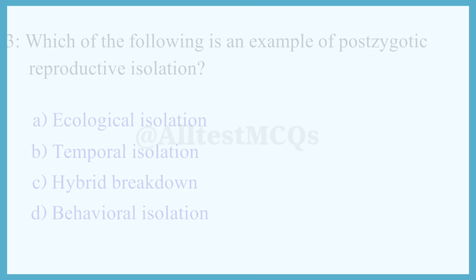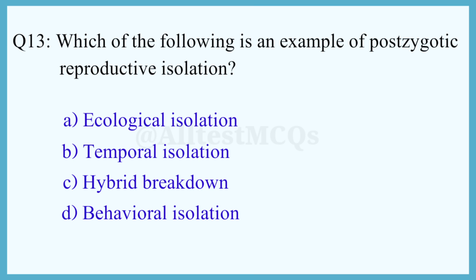Q13. Which of the following is an example of post-zygotic reproductive isolation? The correct answer is option C: Hybrid breakdown.